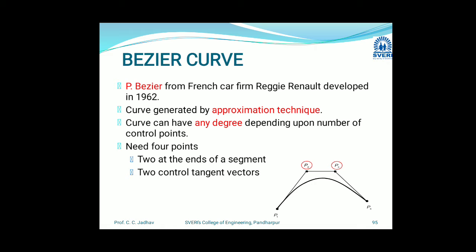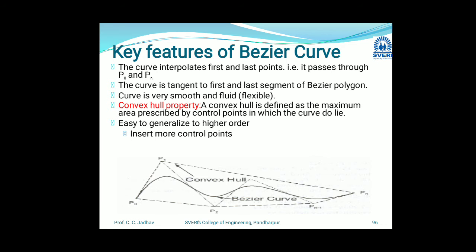Here the control points go from P1 to P4 — P1, P2, P3, P4. We need at least these four points to define the nature of this curve: two at the ends of the segments and two control points defining the tangent of this curve.